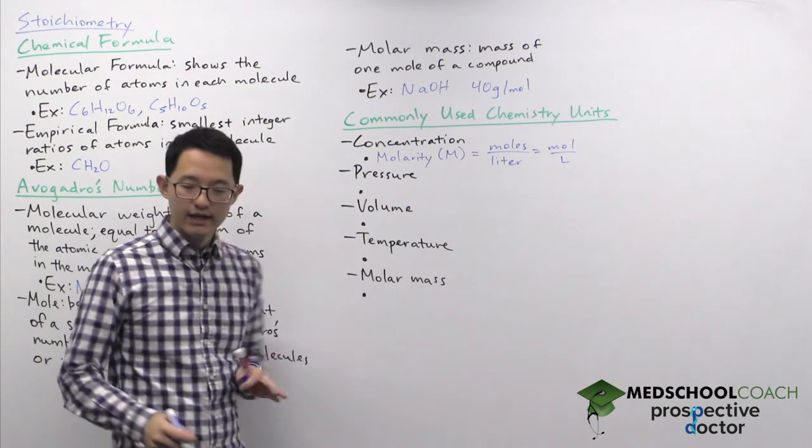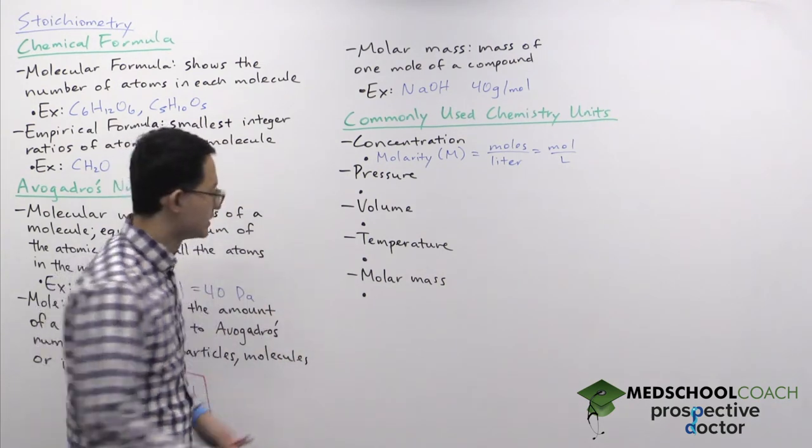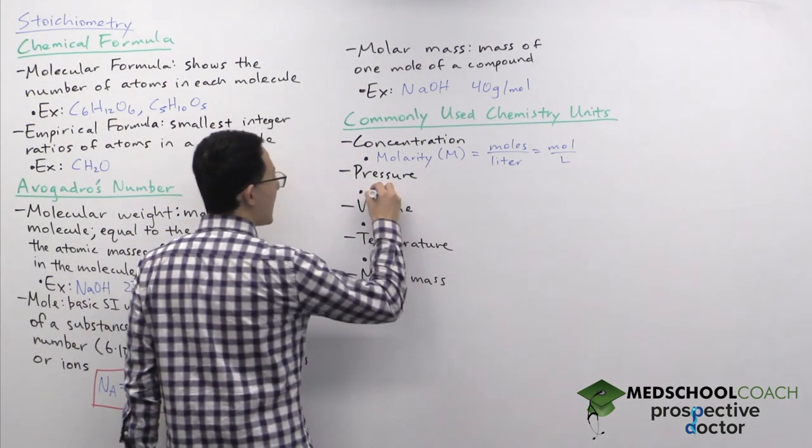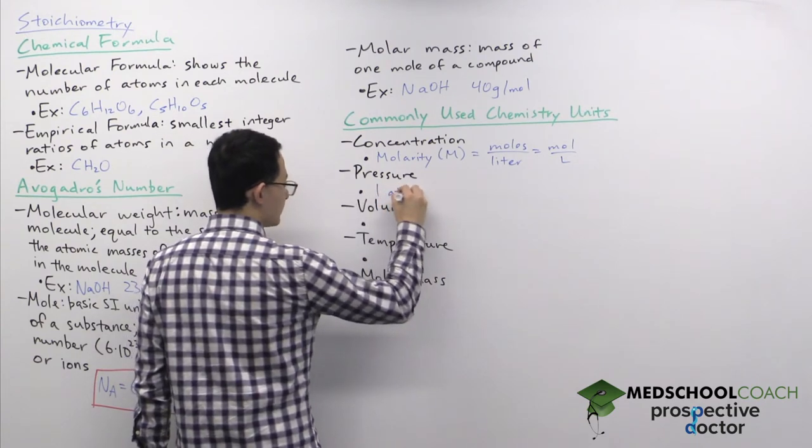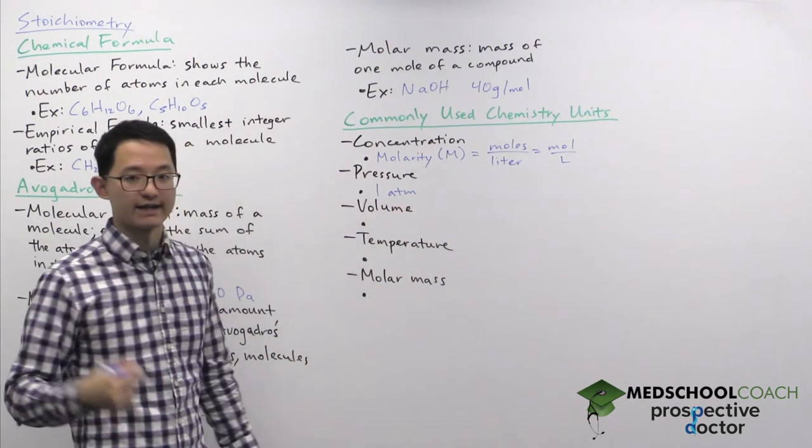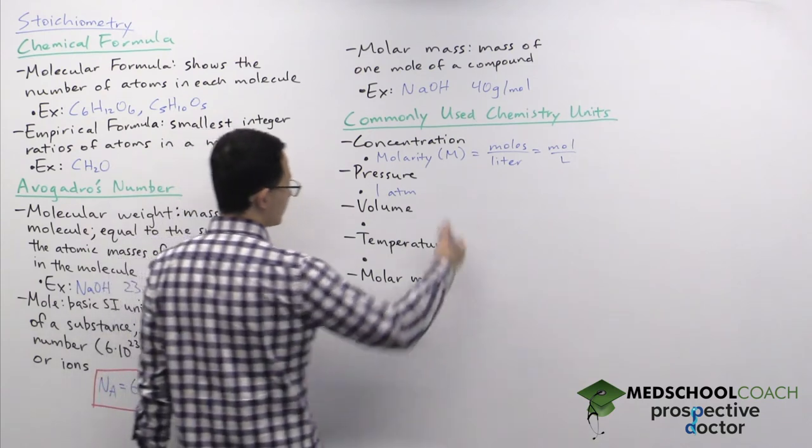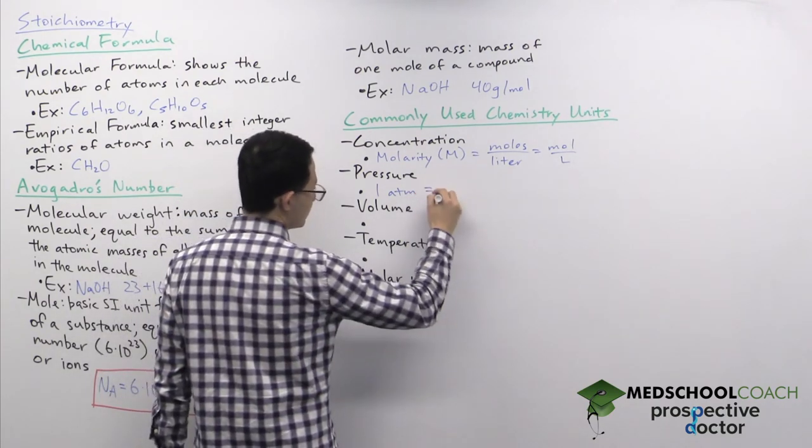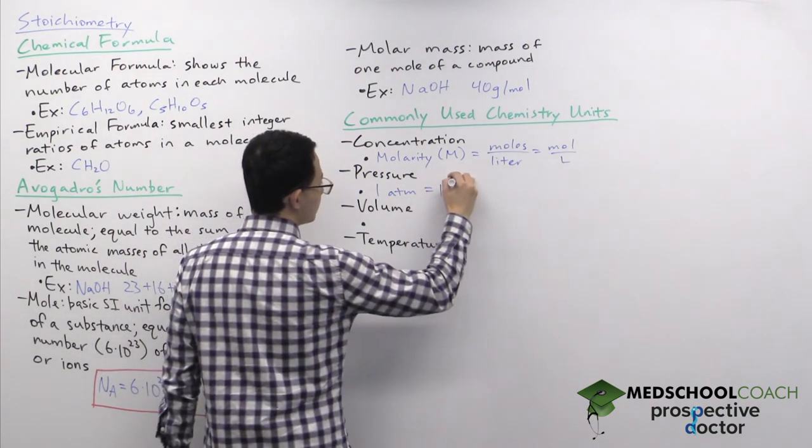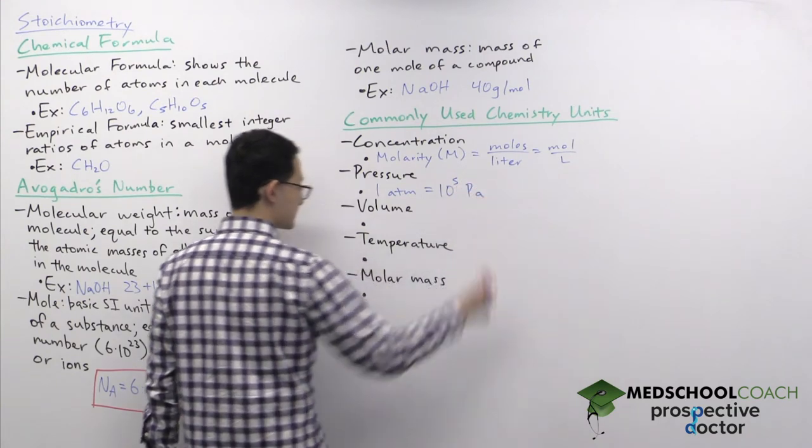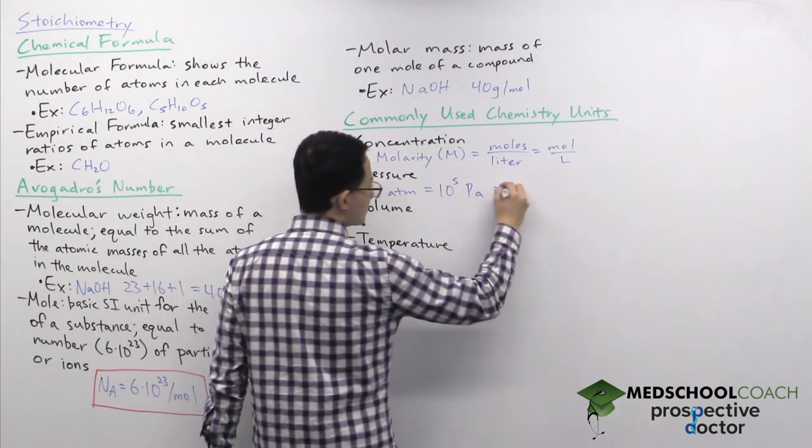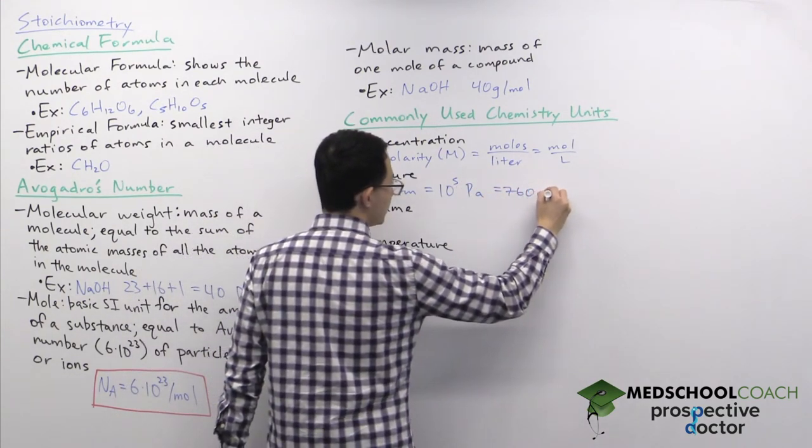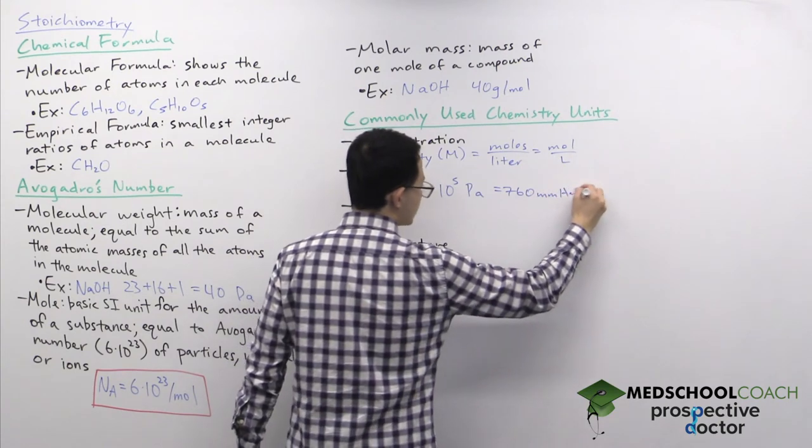For pressure, there are several units that we use. For chemistry, the units that we use the most often are atmospheres. And this we'll use once we get to the videos looking at gases. One atmosphere of pressure is equivalent to 100,000 pascals, or 10 to the 5 pascals. We sometimes also use millimeters of mercury, as well as torrs.